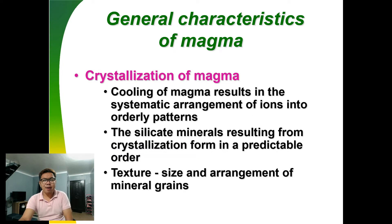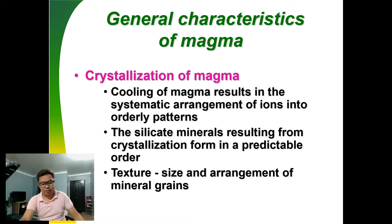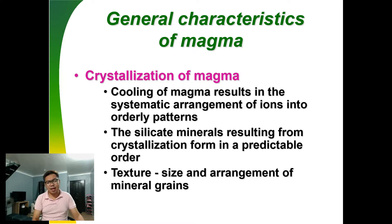Magma crystallizes through a process called crystallization — the cooling of magma resulting in a systematic arrangement of ions into orderly patterns. When silicate minerals undergo crystallization, the order becomes predictable. It can be determined by texture, or the size and arrangement of mineral grains.